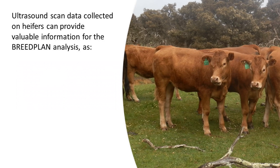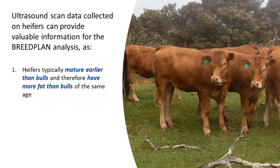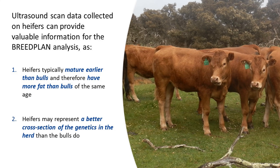The reasons for this are twofold. Firstly, heifers typically mature earlier than bulls and therefore have more fat than bulls of the same age. This is useful for the Breedplan analysis as animals that are fatter at the time of scanning will exhibit greater variation in rib fat depth, rump fat depth and marbling than leaner animals. Secondly, heifers may represent a better cross-section of the genetics in the herd than bulls do, because a typical herd will retain many more heifers than bulls and will therefore have more heifers than bulls remaining in the herd at scanning.